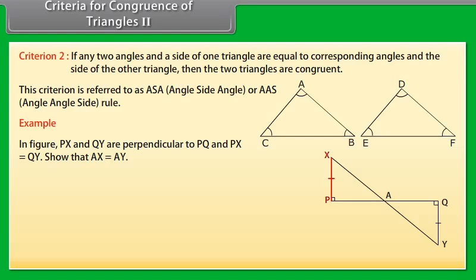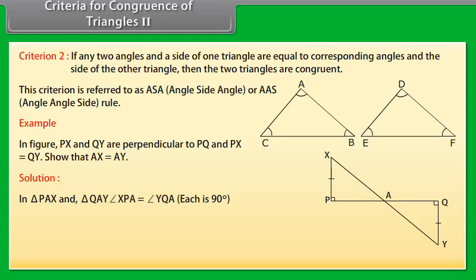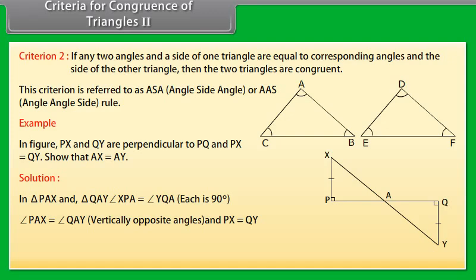Example: In the figure, PX and QY are perpendicular to PQ, and PX is equal to QY. Show that AX is equal to AY. Solution: In triangle PAX and triangle QAY, angle XPA is equal to angle YQA because each is 90 degrees. Angle PAX is equal to angle QAY because these are vertically opposite angles, and PX is equal to QY. Therefore, by AAS congruence rule, triangle PAX is congruent to triangle QAY. Therefore, AX is equal to AY by CPCT.